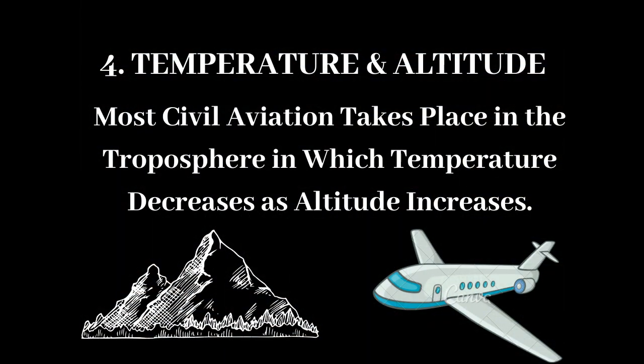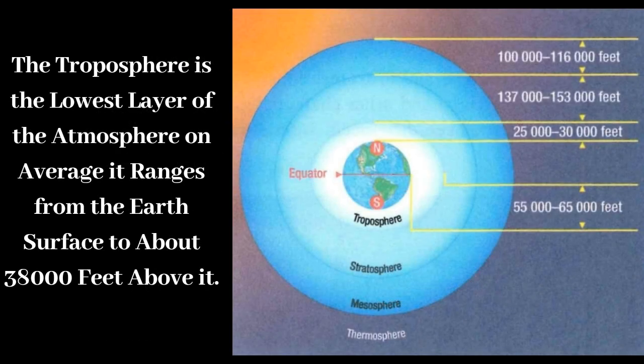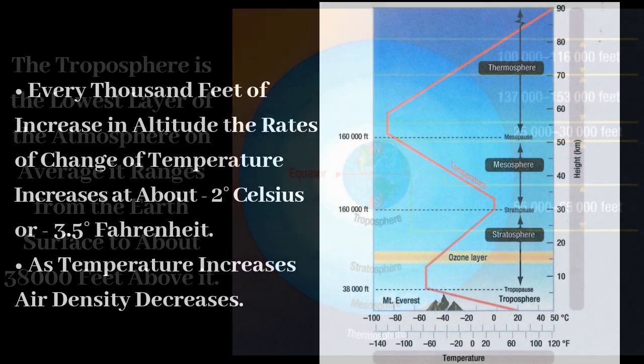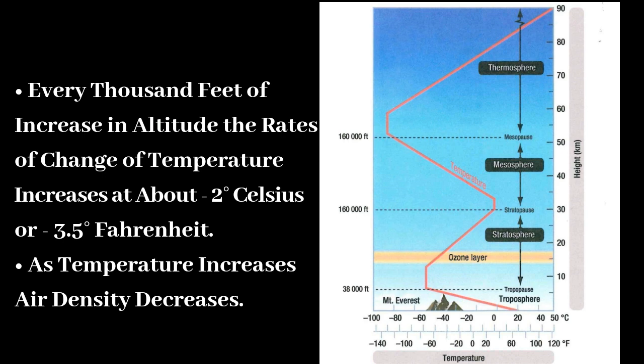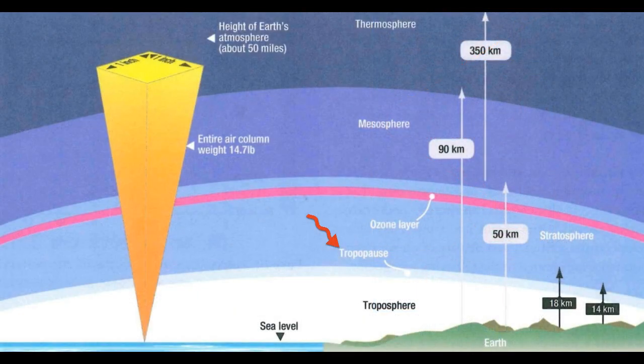Coming to temperature and altitude — most civil aviation takes place in the troposphere, in which temperature decreases as altitude increases. The troposphere is the lowest layer of the atmosphere; on average it ranges from the earth's surface to about 38,000 feet above it. For every thousand feet of increase in altitude, the rate of change of temperature is approximately minus 2 degrees Celsius or minus 3.5 degrees Fahrenheit. As temperature increases, air density decreases.